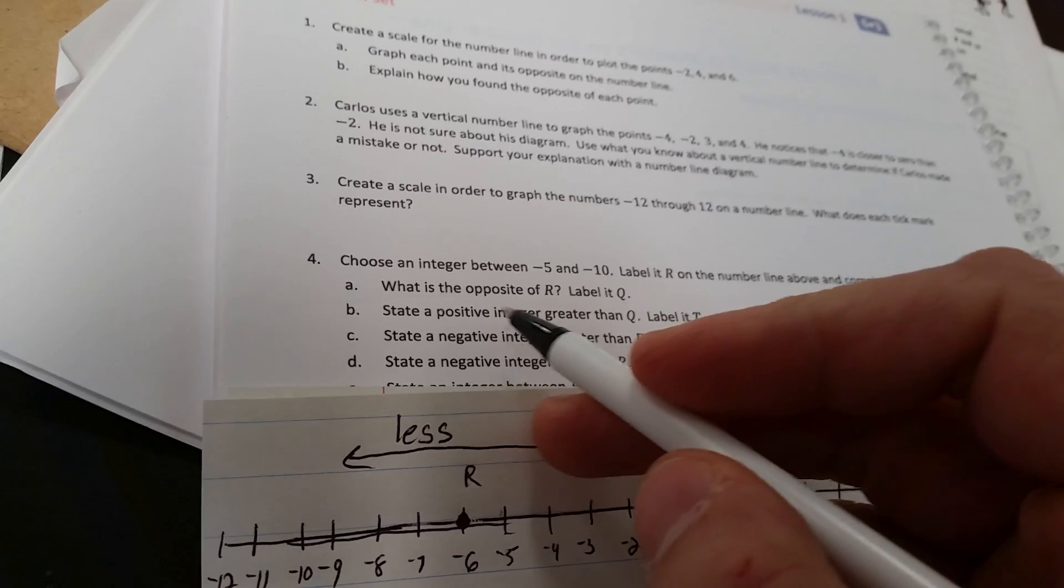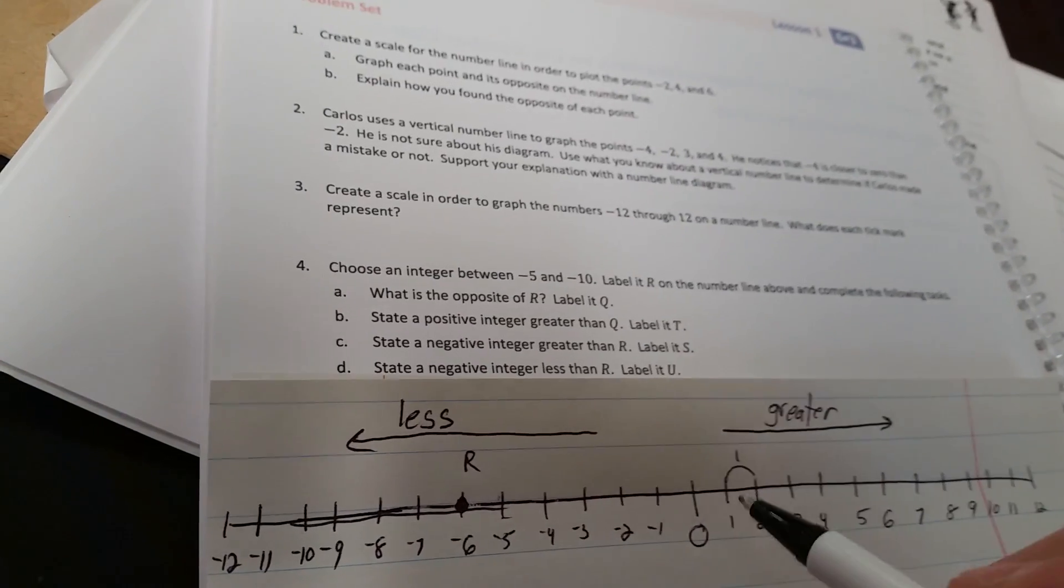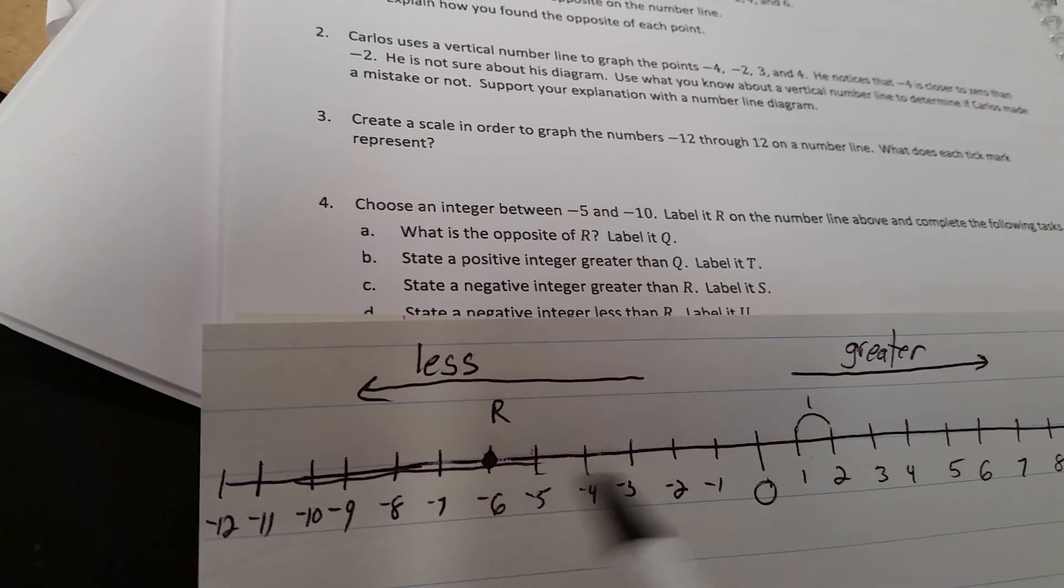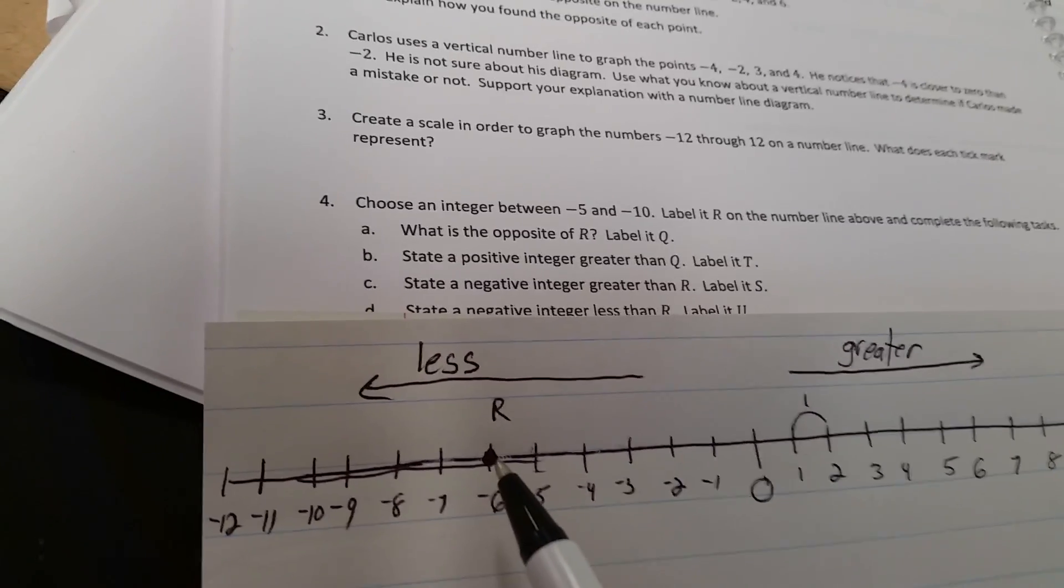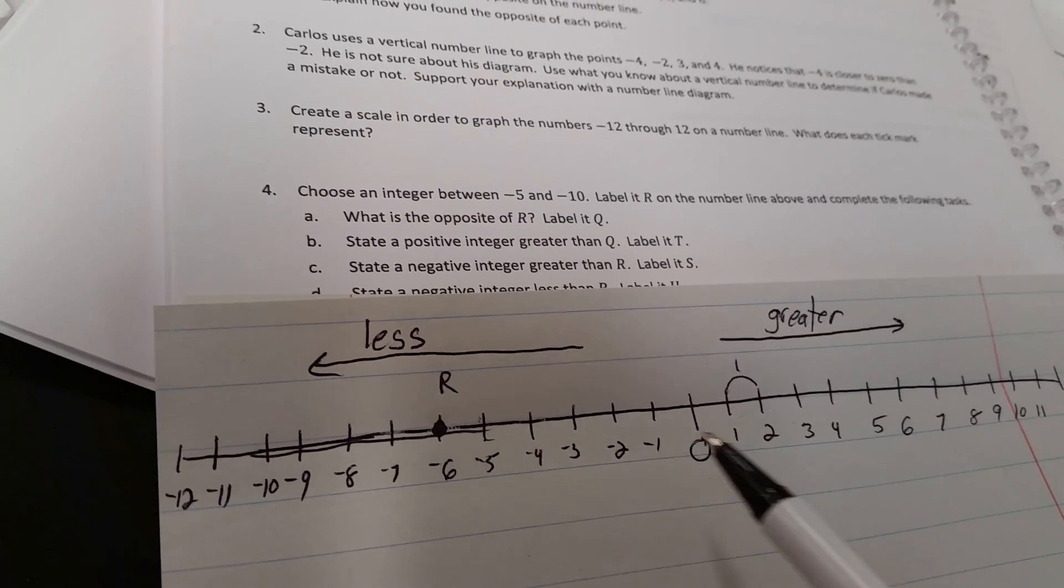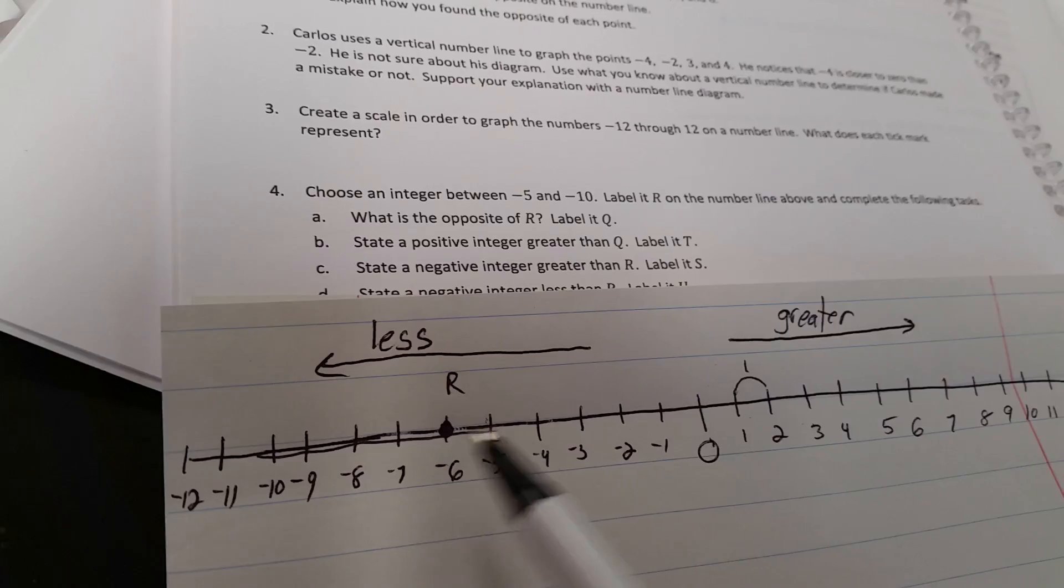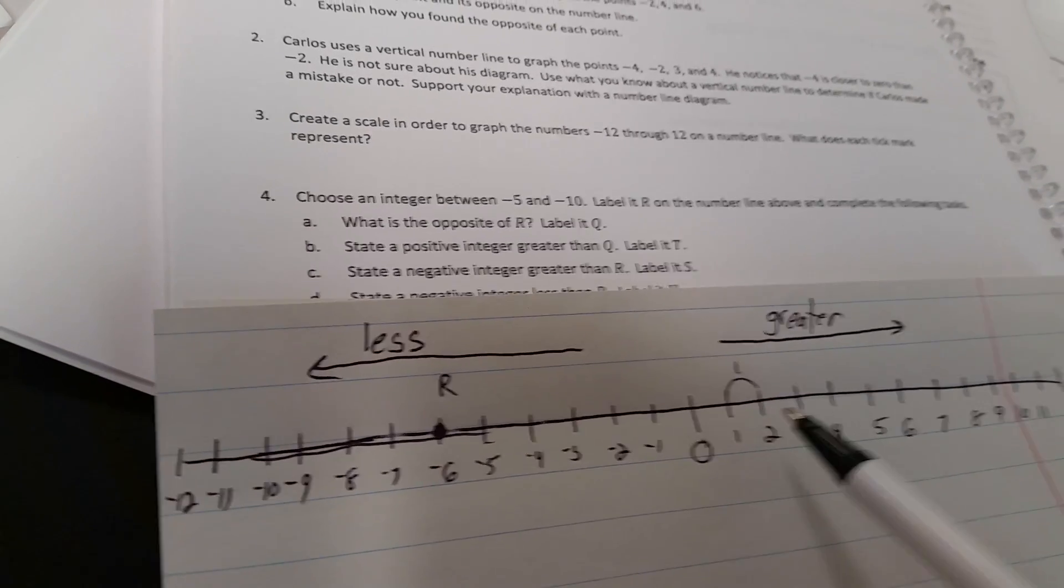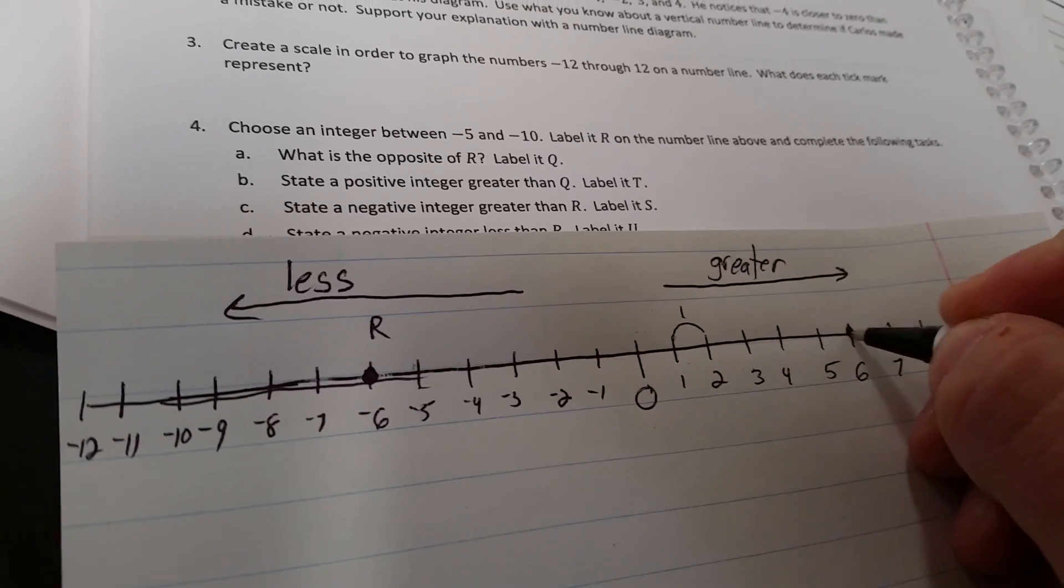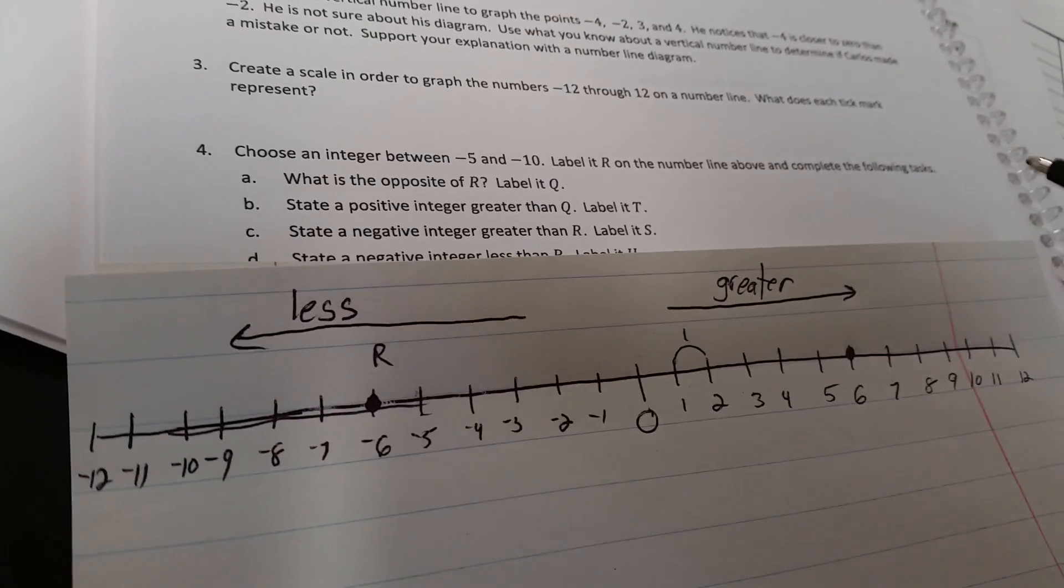Question A says, what is the opposite of r? Well, the opposite means it's the same distance away from 0 on the other side of 0. So here we're to the left of 0. To find the opposite, we want to be to the right of 0. So how far is it away from 0? It's 1, 2, 3, 4, 5, 6. So on the right side, it's going to be 6 spots away from 0, which is 6. And we're going to label that q.